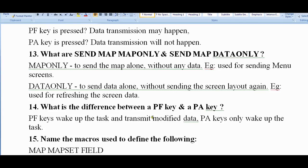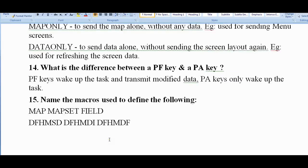What is the difference between PF key and PA key? PF key wakes up the task and transmits modified data. PA key only wakes up the task. Name the macros used to define the following: map - DFHMSD, mapset - DFHMDI, and field - DFHMDF.